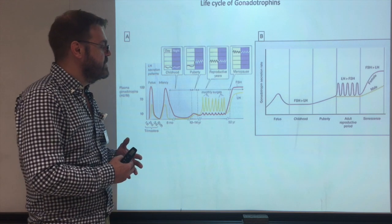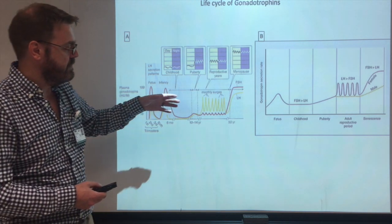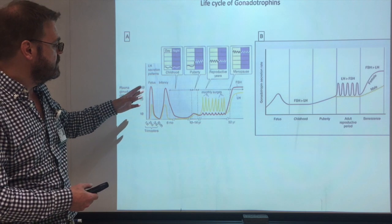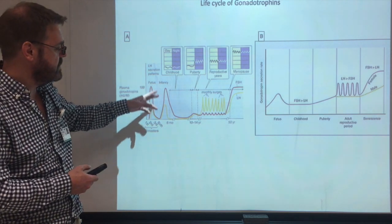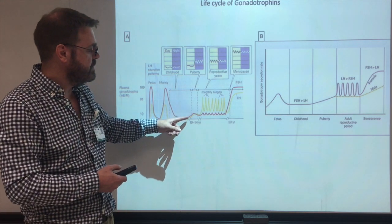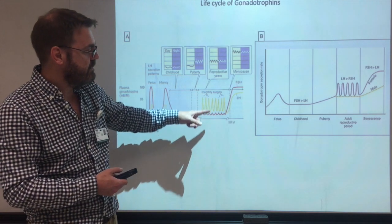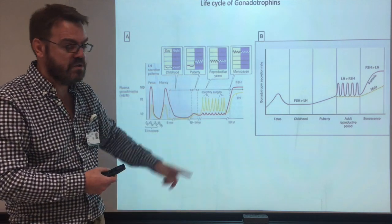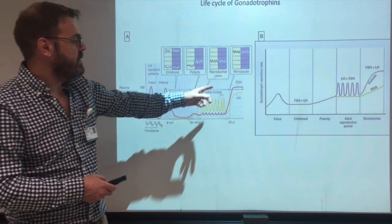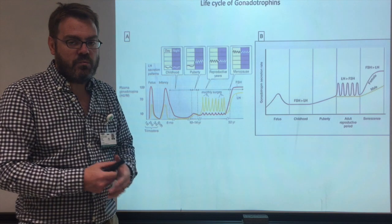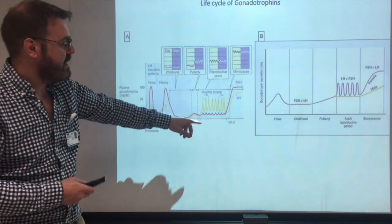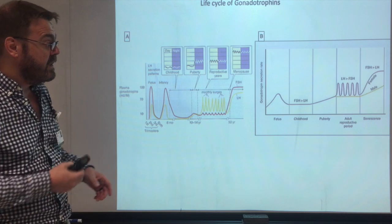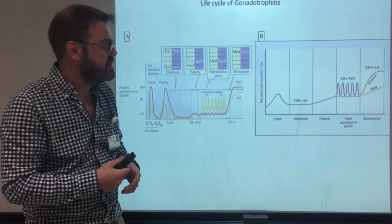The life cycle of the gonadotropins is shown here. On the left, for the female, we get a couple of spikes of FSH and LH during early years, which then drops down until puberty where they start to rise again. During reproductive years there are monthly surges and spikes of LH and FSH, and then after menopause, where ovulation stops and estrogen is no longer released, the lack of feedback causes gonadotropins to remain persistently high.